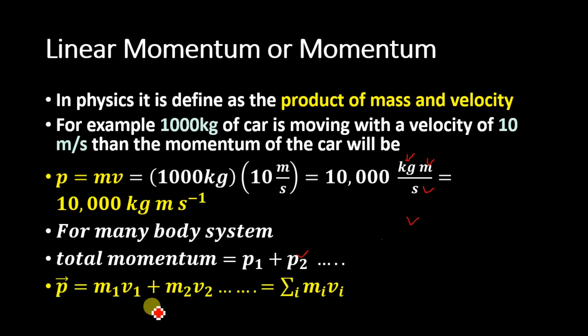So for a many body system, the linear momentum p is equal to m1v1 plus m2v2 and so on, which is equal to the sum of i, mi and vi, where i equals 1, 2, 3, 4, and so on. Keep in mind momentum is a vector quantity and the direction of linear momentum is the direction of this velocity v.